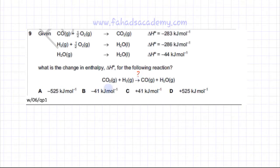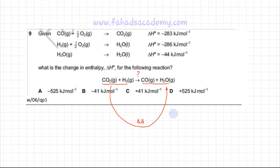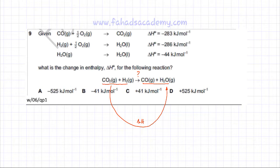Starting with the reactants, the goal is to create an alternative path that produces the same products. The enthalpy change of that alternative path will be exactly the same as for the direct reaction, because the same bonds are broken and formed. This alternative route will be constructed using the three given reactions and their enthalpy changes.